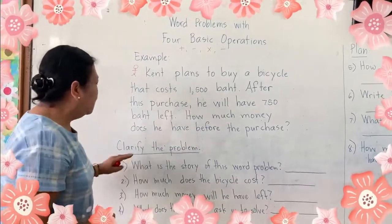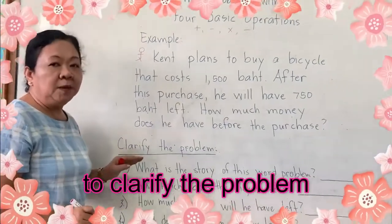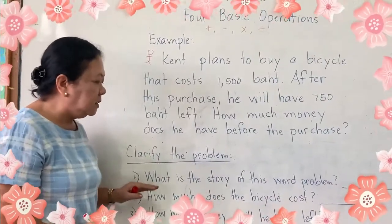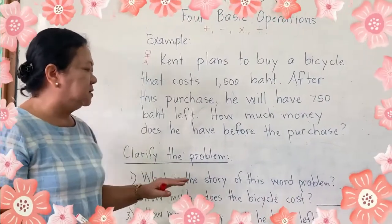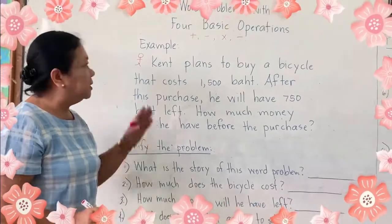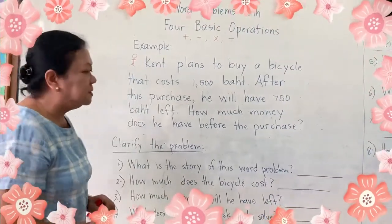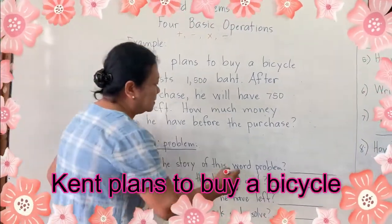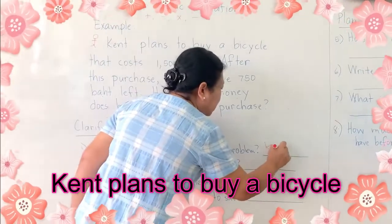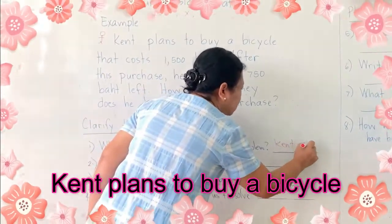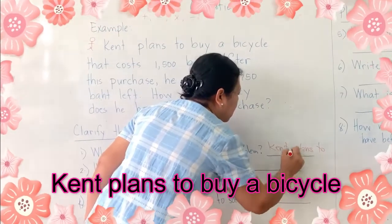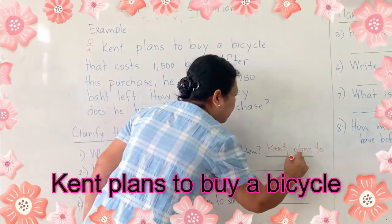To clarify the problem, number one: what is the story of this word problem? The story of this word problem is about Kemp, who plans to buy a bicycle.